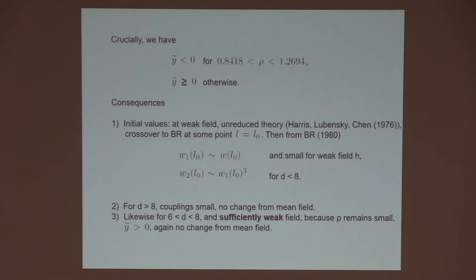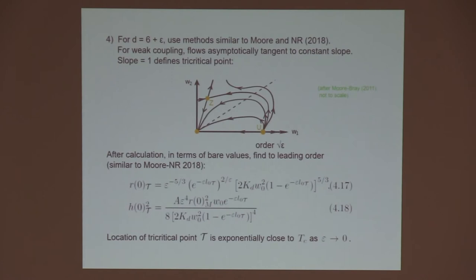In this region these W1 and W2 obey the same flow equation that I have here. That means that the ratio of them stays constant under the flow for D bigger than 8. So the consequence is that rho is small and we're always in the region where Y tilde is positive, so for D bigger than 8 we certainly still end up with the usual Almeida-Thaulis transition. For D between 6 and 8, if the magnetic field is sufficiently weak with which is again in a regime where rho remains small and Y tilde is positive, there's no difference in this regime either. But if we come close to 6 dimensions and we look at slightly larger magnetic fields, we see some structure in these flows. If we're at very weak coupling or higher dimensions we just get these flows radial into the origin. But near 6 dimensions we can actually access this and now we have these flows which were pictured by Moore and Bray in 2011.